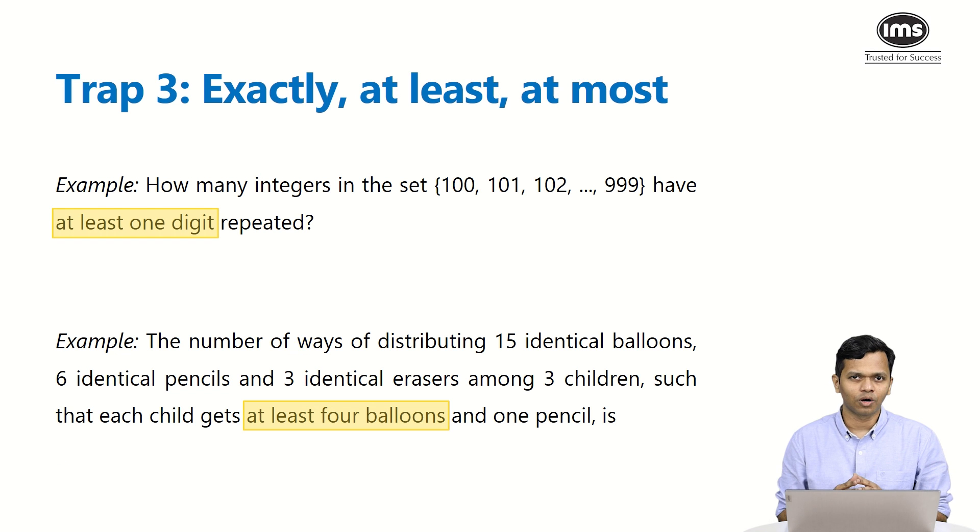And if you don't get that clearly, for example, instead of no real roots you end up reading it as real roots, it will become a problem. Similarly, if you ignore the distinct part of distinct real roots, then also it will become a problem for you. So you have to read carefully and you have to understand the meaning of these terms. The third kind of trap that I'm going to talk about is something that impacts the interpretation a lot. These words are exactly, at least, at most. For example, the first question says: how many integers in the set have at least one digit repeated? The question becomes very different if you read it as exactly one digit repeated.